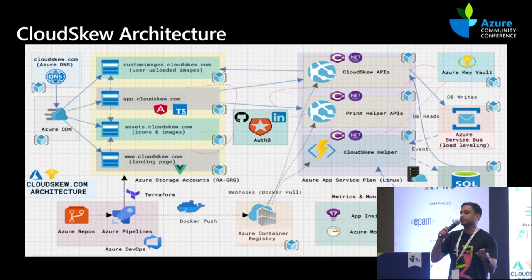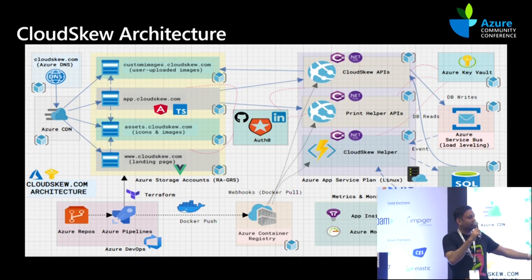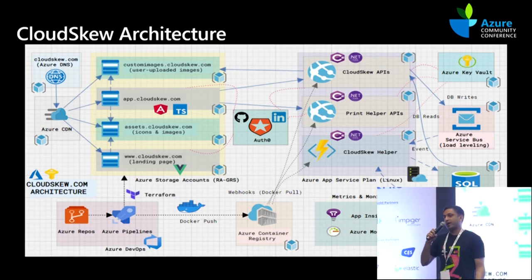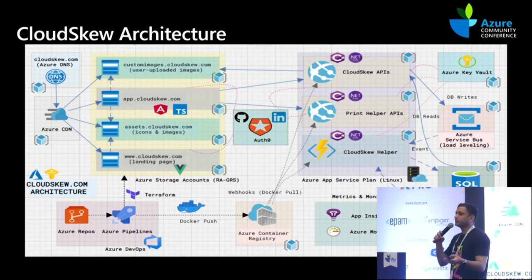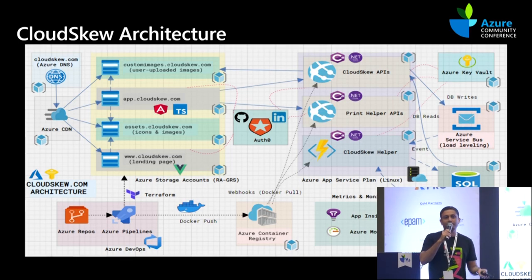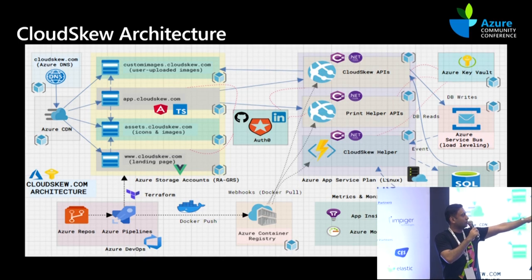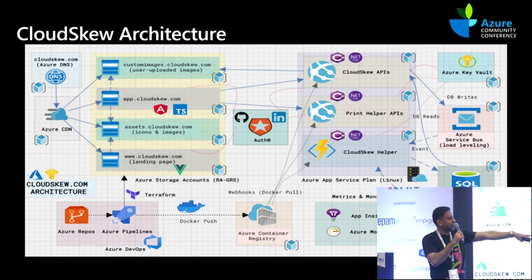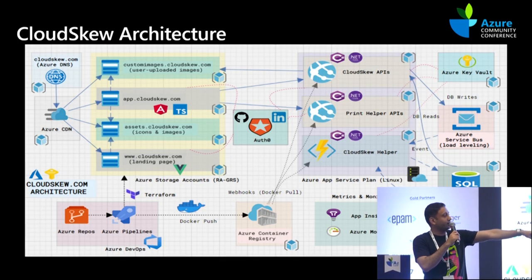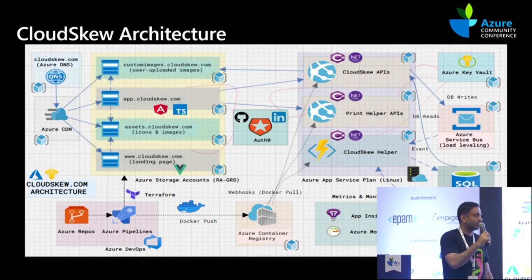The Cloud SKU helper is an Azure Function. The other two are App Services in separate app service plans — they're separated because the print helper has a high memory footprint. When printing large diagrams it tends to consume a lot of working-set memory and can recycle the app service, so I've isolated it into its own app service plan. All application configuration — passwords, database connection strings — goes into Key Vault. When the backend wakes up, the first thing it does is talk to Key Vault to get the connection strings.